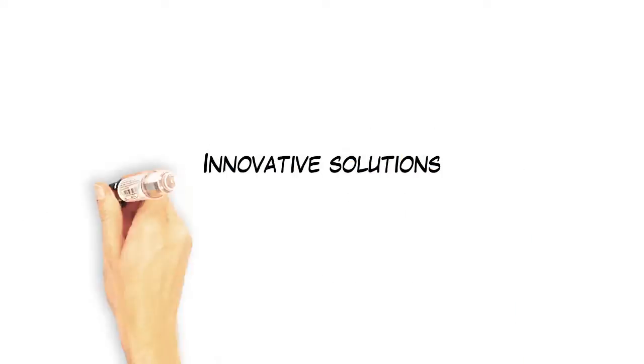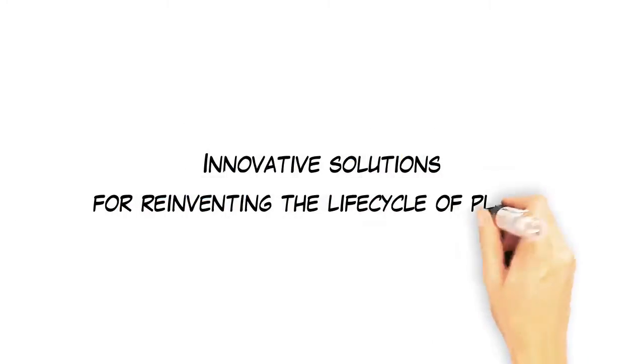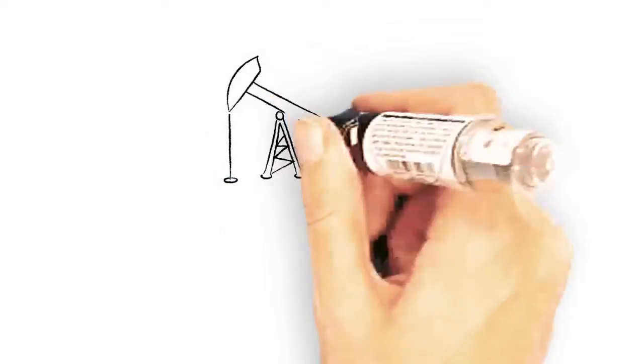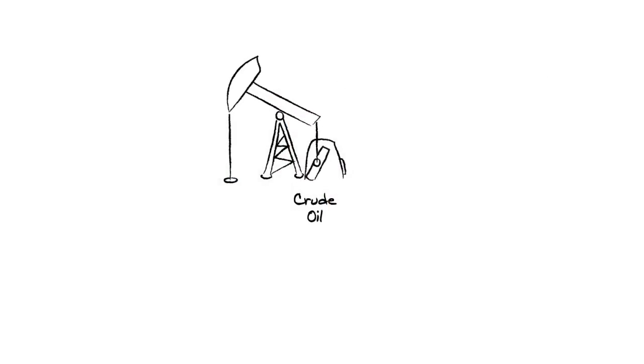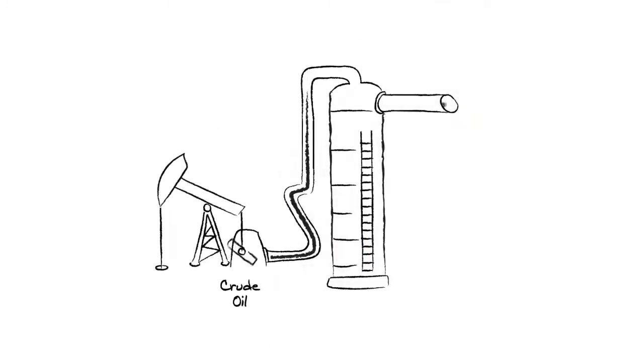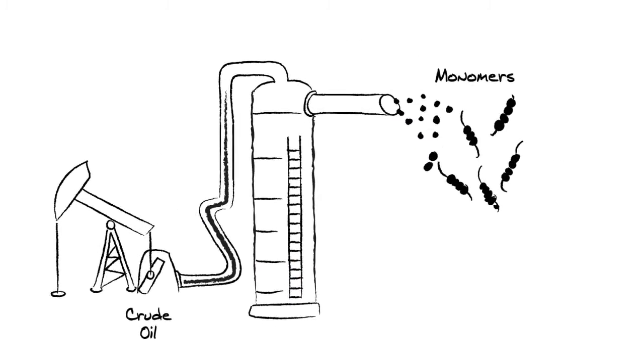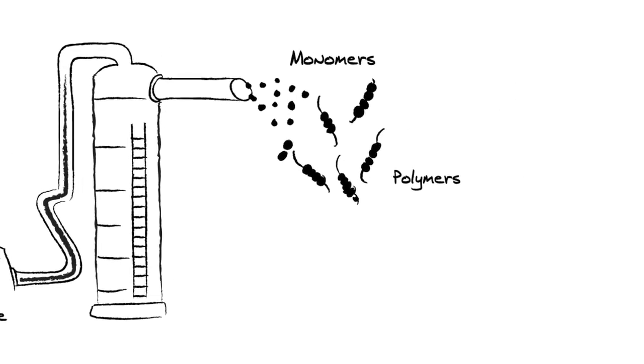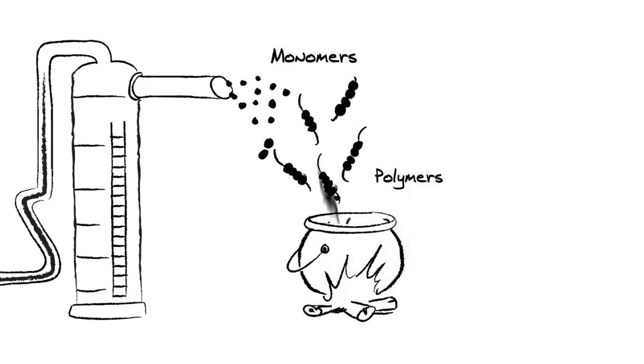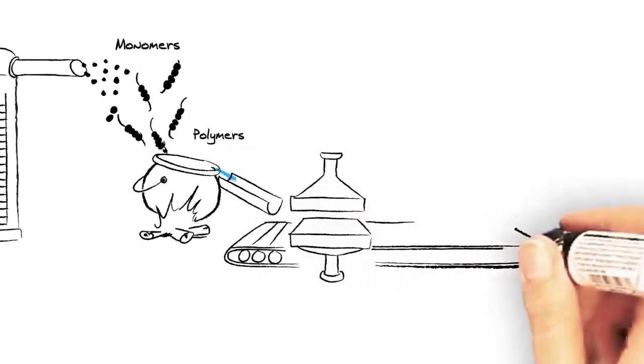Innovative solutions for reinventing the life cycle of plastic. Plastic is produced from crude oil. The oil is processed into monomers, which are assembled to form polymer chains. These polymers are then mixed and melted to be converted into plastic.